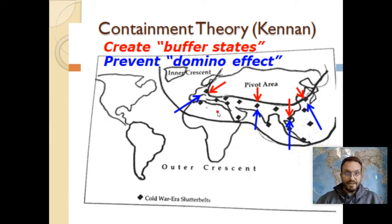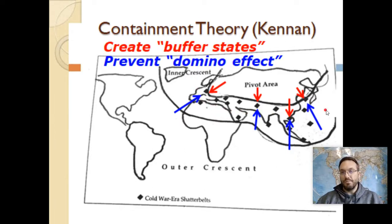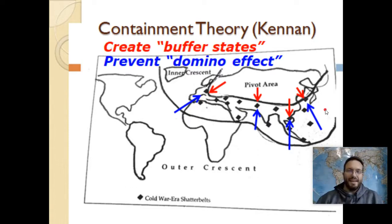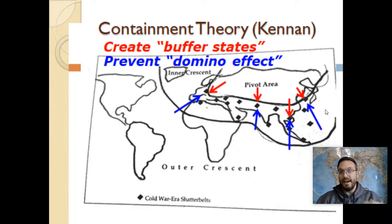The other thought with containment is that if one area in the rimland falls to communism, it will make it easier for others to fall. So if one falls, the whole domino effect starts — communism escapes containment, gets into the rimland, and can now control the power of the world.